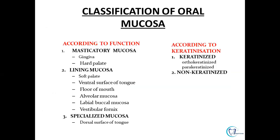When we classify oral mucosa based on functional adaptation, the mucosa which bears masticatory forces is the masticatory mucosa, comprising gingiva and hard palate. The mucosa which lines and moistens the oral cavity is the lining mucosa, comprising soft palate, ventral surface of tongue, floor of mouth, alveolar mucosa, labial and buccal mucosa, and the fornix. There is also specialized mucosa which carries special sensation and comprises the dorsal surface of tongue.